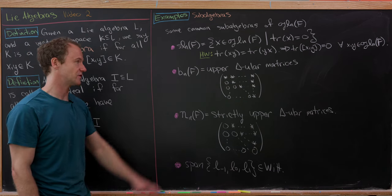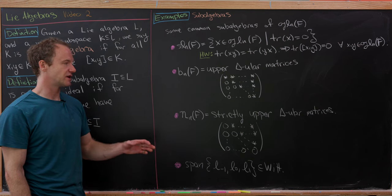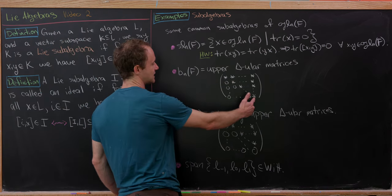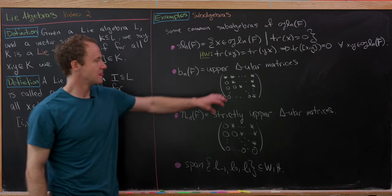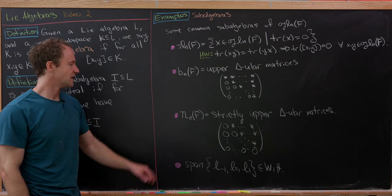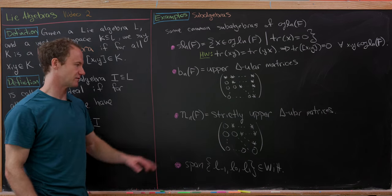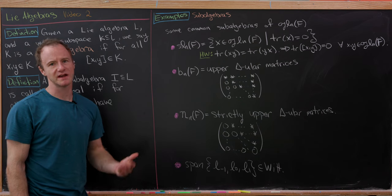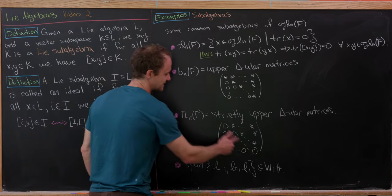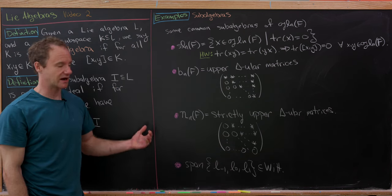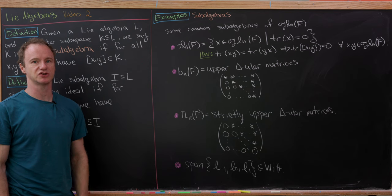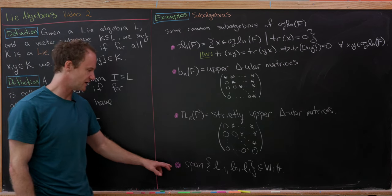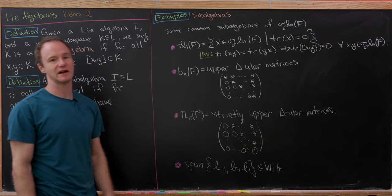Next up we have B(n,F), the set of all upper triangular matrices, where the only non-zero entries are on or above the diagonal. Then we have the strictly upper triangular matrices, N(n,F) — N for nilpotent — because these are all nilpotent, meaning you can raise them to a certain power and get zero. Here we have zeros on and below the diagonal, with possibly non-zero entries above the diagonal.